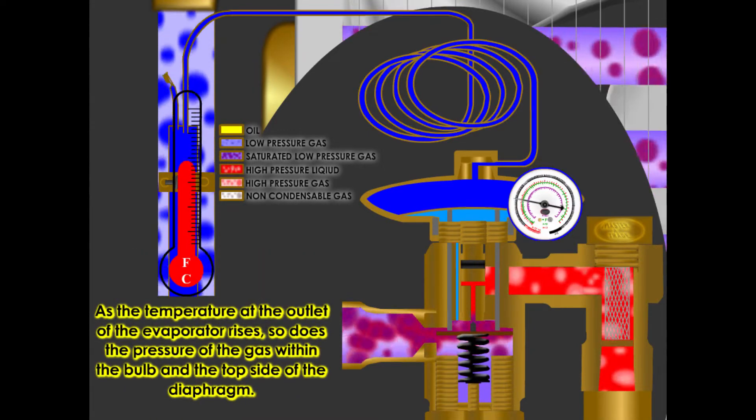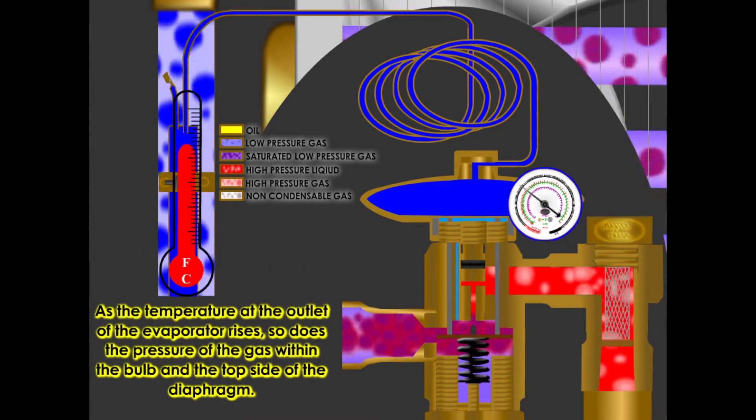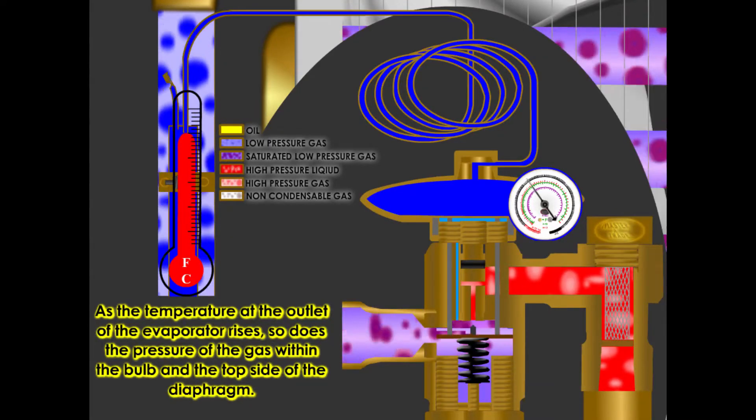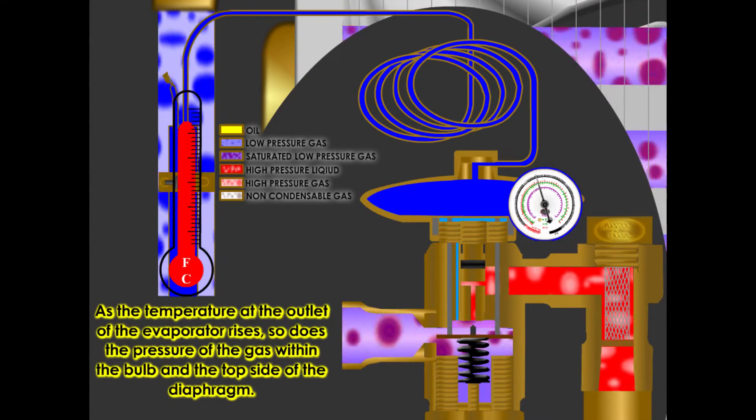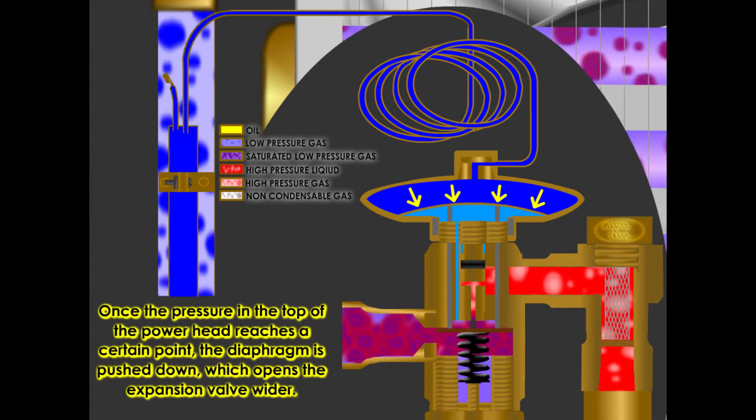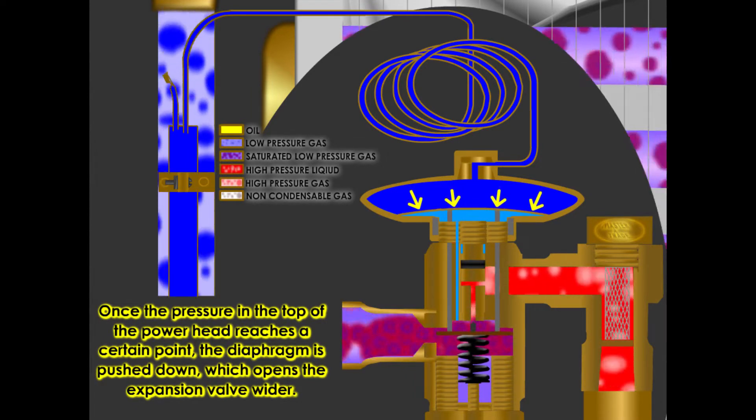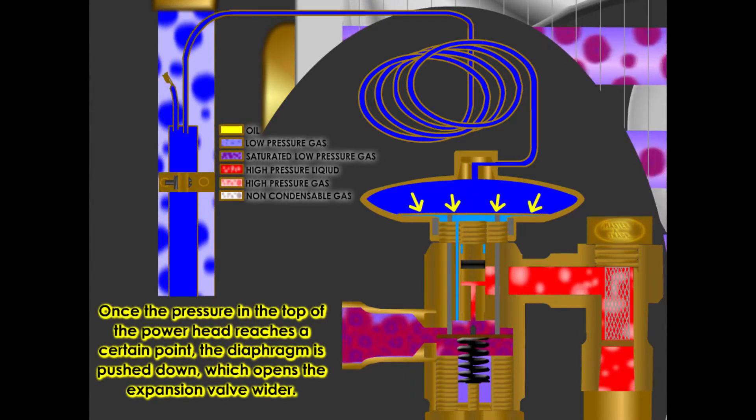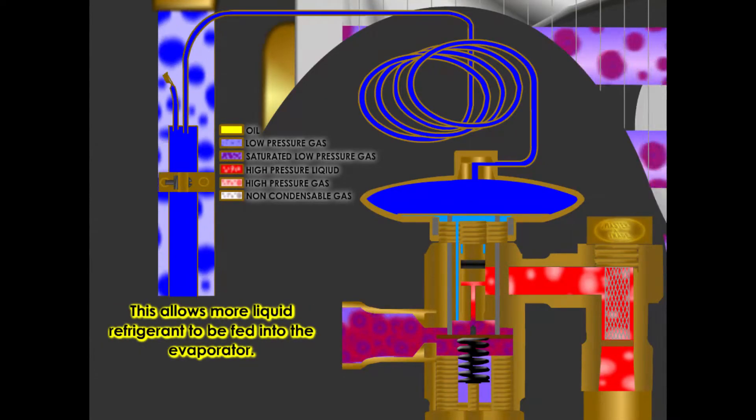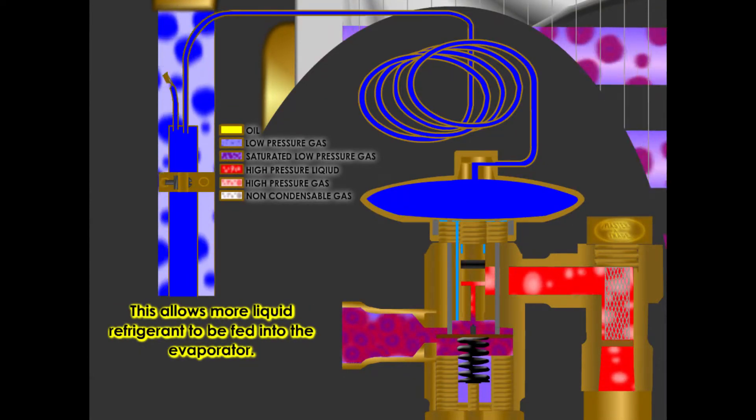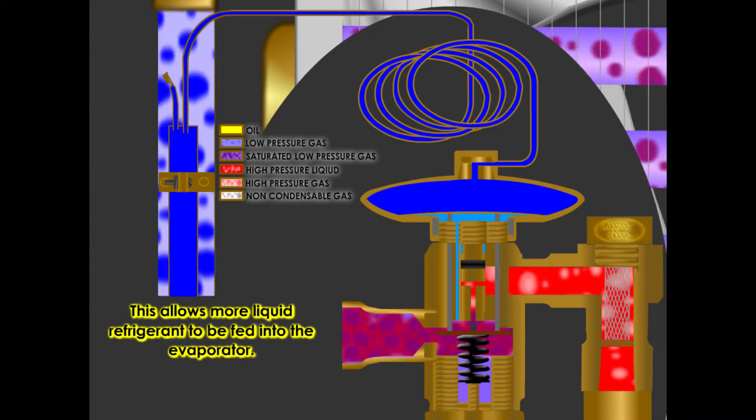As the temperature at the outlet of the evaporator rises, so does the pressure of the gas within the bulb and the top side of the diaphragm. Once the pressure in the top of the power head reaches a certain point, the diaphragm is pushed down, which opens the expansion valve wider. This allows more liquid refrigerant to be fed into the evaporator.